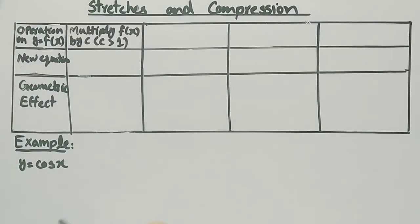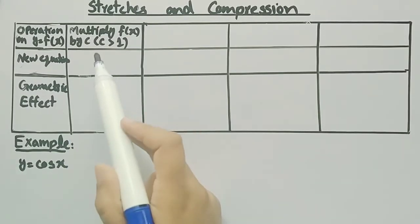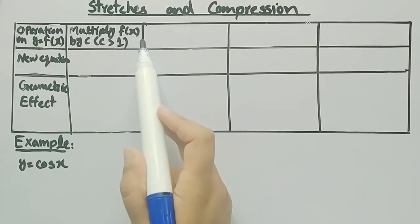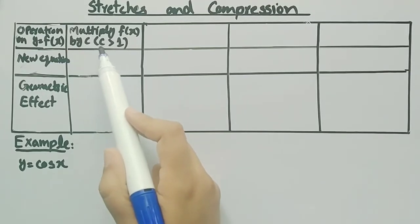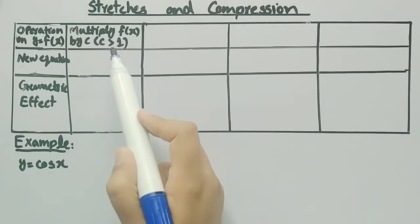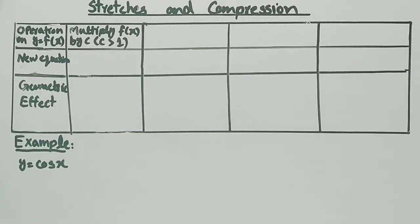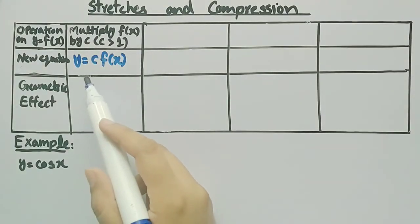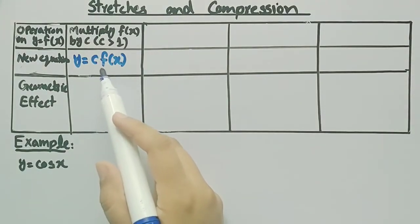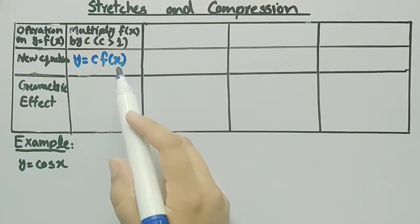The first operation we are considering is when we multiply f(x) by c, where c is a constant greater than one. The new equation will be y = c times f(x).